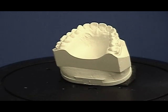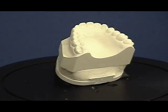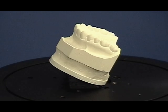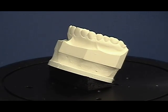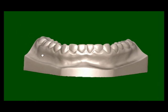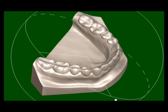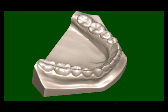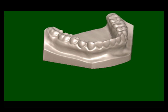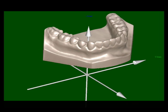The process starts by laser scanning upper and lower plaster models. This results in a three-dimensional model of the upper and lower arches. The models are calibrated with respect to the mounting plate. This allows them to be accurately positioned and moved as they would be on a standard articulator.